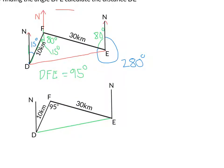So what I've done there is just draw a simplified version of what we know. We've got the two sides, 10 kilometers, 30 kilometers, and we've worked out that D, F, E, is 95. And now we need to work out what D, E is.